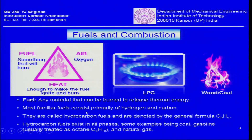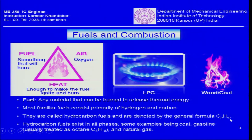Most familiar fuels — LPG, wood, coal — are primarily organic compounds of hydrogen and carbon, which is why they are called hydrocarbon fuels. They are denoted by the general formula C_N H_M, where N is the number of carbon atoms and M the number of hydrogen atoms. Examples include propane, ethane, and ethylene. You can also have oxygen in the fuel molecule itself, as in alcohols which carry an OH radical, or nitrogen and sulfur compounds attached to organic chains.